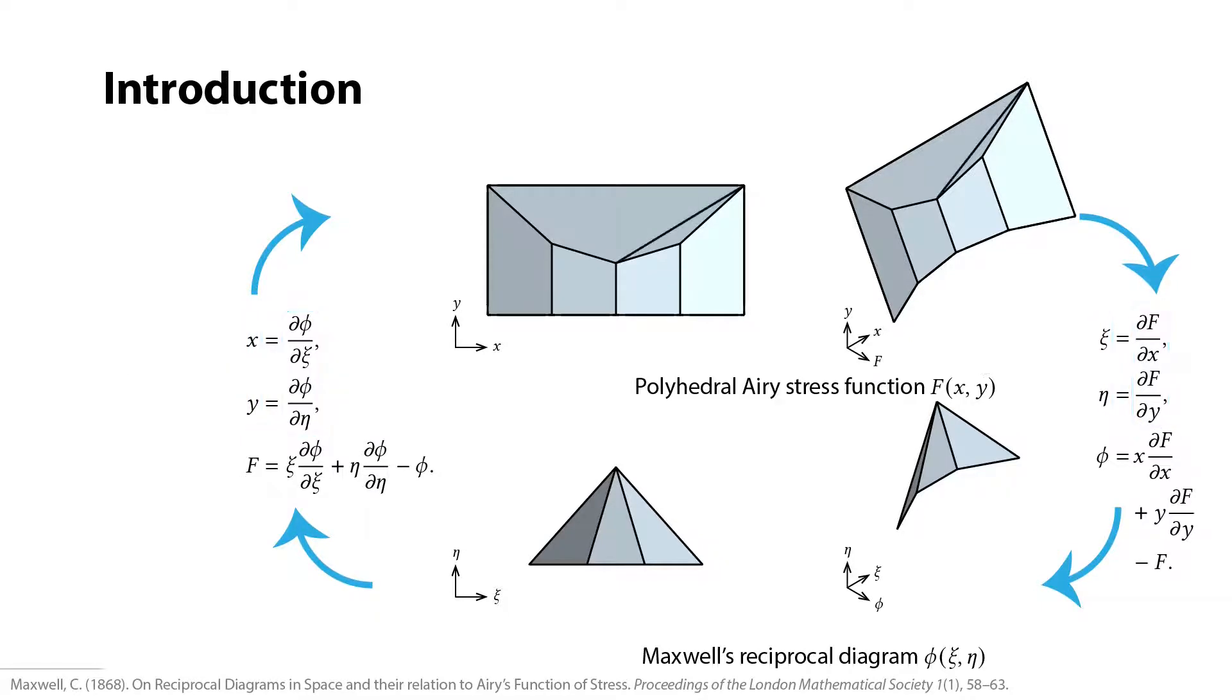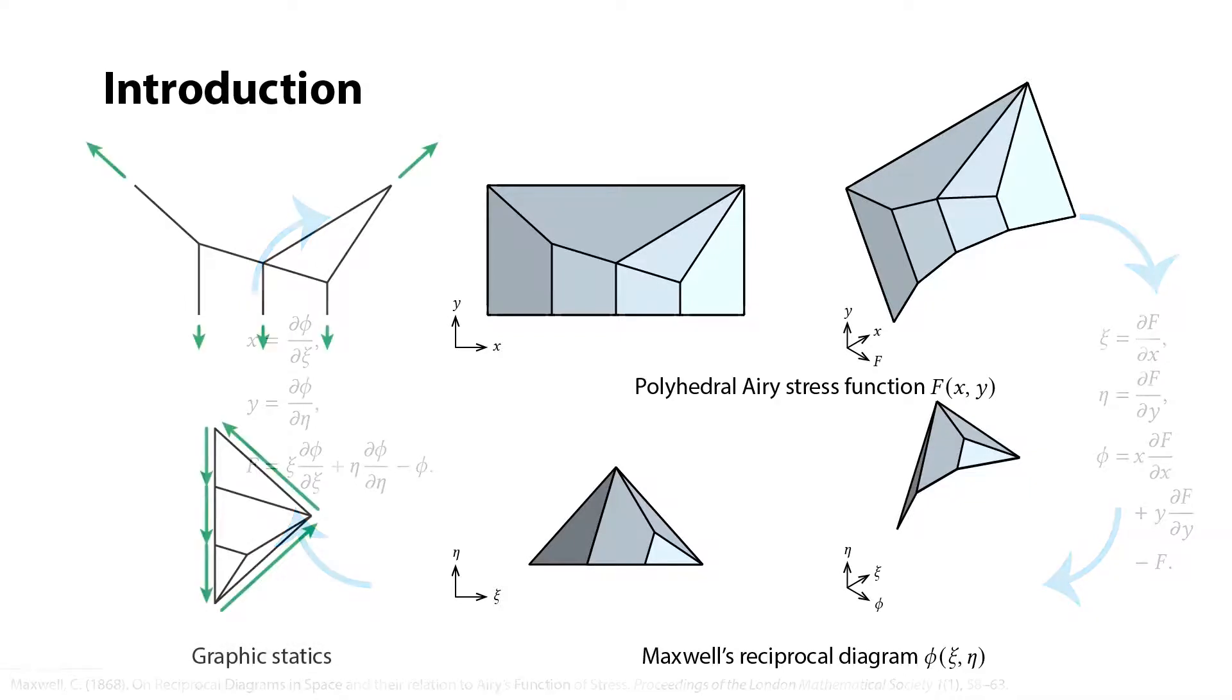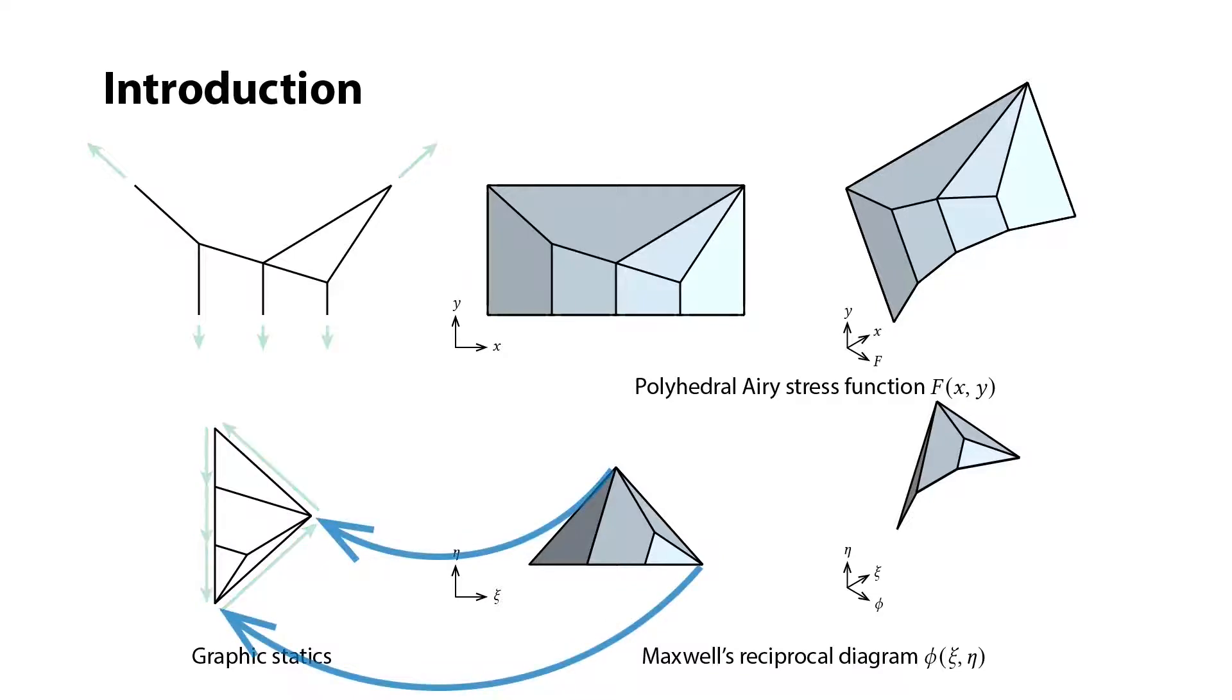If we divide a face into two and gradually rotate one of them, the slope of these two faces becomes more distinct. The corresponding points gradually drift apart. And the reciprocal diagram phi and eta is exactly the 90-degree rotation of the force diagram in the graphic statics.